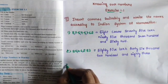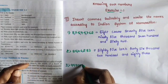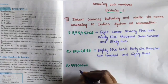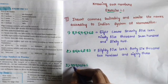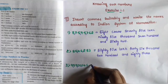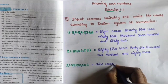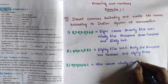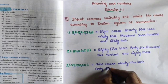Next, question number three: 9,99,00,046. Insert commas according to the Indian system of numeration — units, tens, hundreds, thousands, ten thousands, lakhs, ten lakhs, crore. Written in words: nine crore, ninety-nine lakh, forty-six.